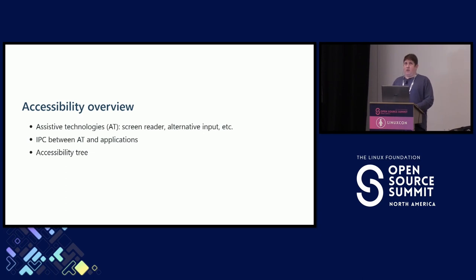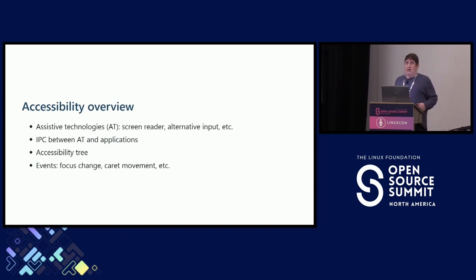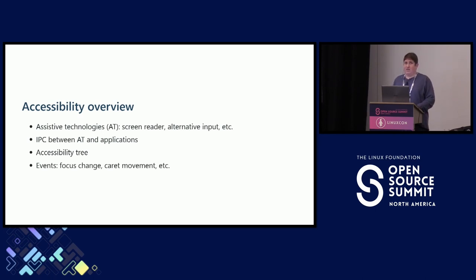For some more complex controls such as text edit controls, the control might have child nodes such as the individual lines or spans of text. And the application, or in practice the UI toolkit implementing the accessibility support, will emit events such as when the keyboard focus changes, when the text caret or insertion point changes, when the text selection changes, etc.